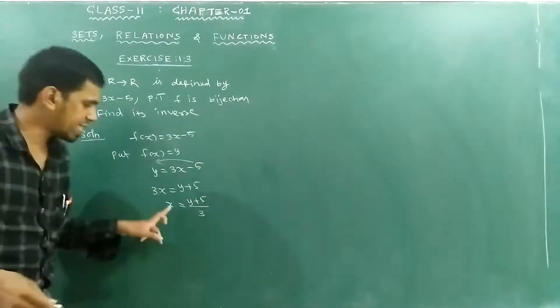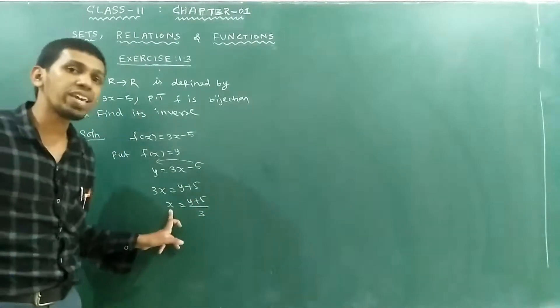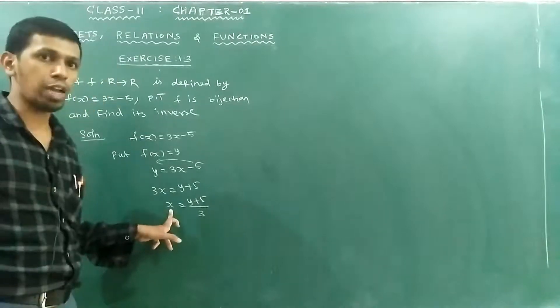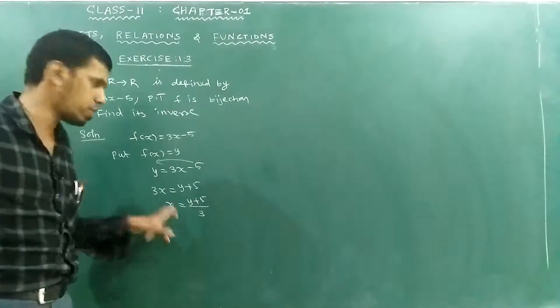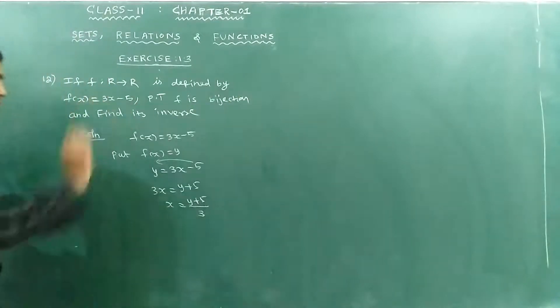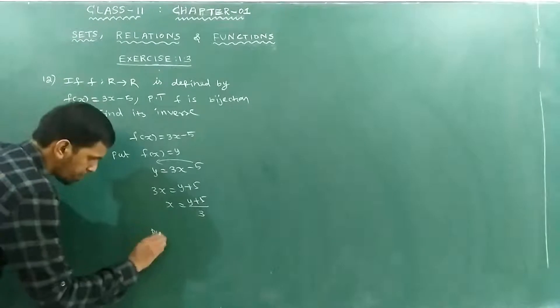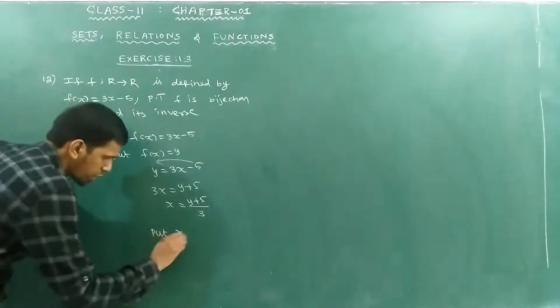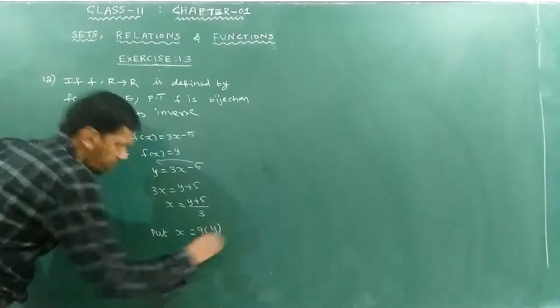So x is equal to y plus 5 divided by 3. Now define g of y equal to y plus 5 divided by 3. This gives us the inverse procedure.